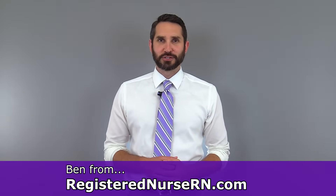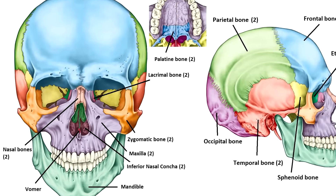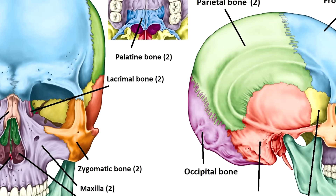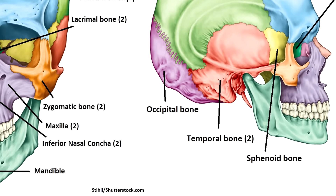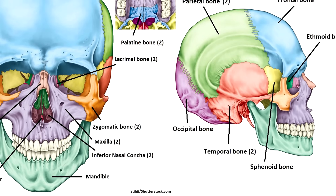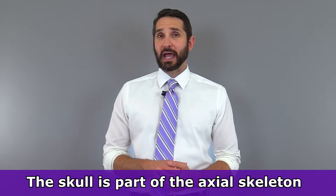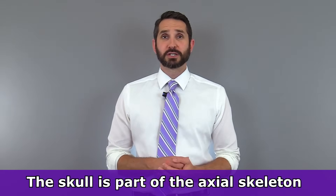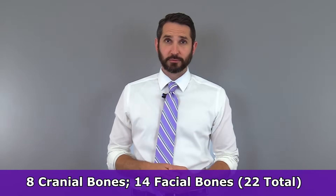Hey everyone, this is Ben with RegisteredNurseRN.com. In anatomy and physiology you'll learn about the 22 skull bones, most of which consist of flat or irregular bones connected together by jagged suture joints, making it look like a creepy 3D jigsaw puzzle. The 22 skull bones make up part of our axial skeleton and can be divided into two main portions: the eight cranial bones and the 14 facial bones.